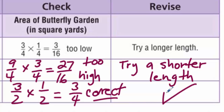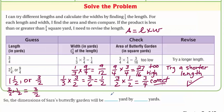The answer seems reasonable. We're taking one-third of the length, so the length is three times greater than the width. One-half, one-half, one-half — that's three times. The dimensions check out perfectly.